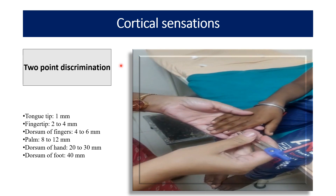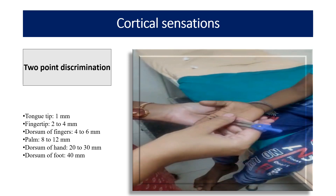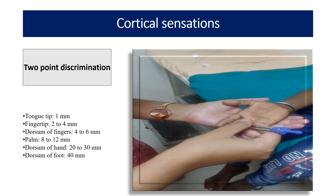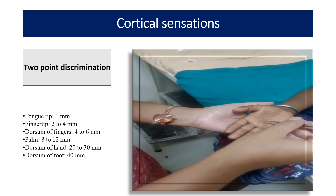For cortical sensation, the first is two-point discrimination. In this video, you can see I am using a compass or a V-shaped clip in which the distance between the two blunt points can be adjusted. This tests the ability to recognize two simultaneously applied blunt points. At the fingertip, the child can feel up to 1 mm; at the finger pad, 2 to 4 mm; dorsum of palm, 4 to 6 mm; palm, 8 to 12 mm; dorsum of hand, 20 to 30 mm; and dorsum of foot, up to 40 mm. We adjust the distance between the two blunt points to assess two-point discrimination.